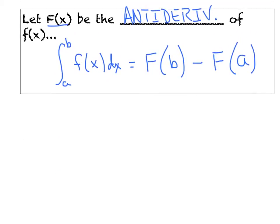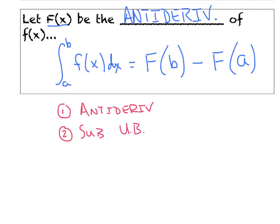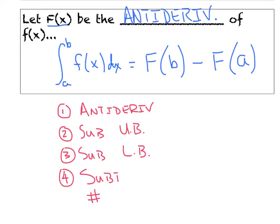Basically, if we want to make a checklist of what we're going to do: number one, we're just going to integrate the function or find its antiderivative. Then we're going to substitute the upper bound first — make sure you go upper bound first — and then substitute the lower bound. Then we're going to subtract, or find the difference between those two values. Whatever that answer is, we'll get some finite number that represents the exact area of whatever region is created by these functions.